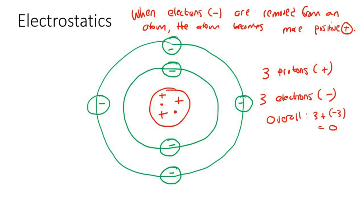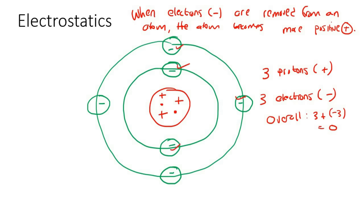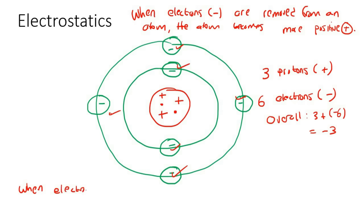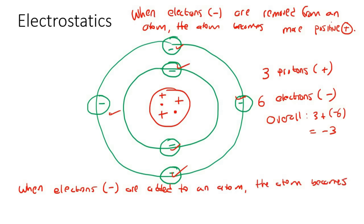We can work it out: there are three positives in this atom, but six negative electrons. So three minus six gives you negative three as your overall charge. The atom has now become more negatively charged. So when electrons, which are negative, are added to an atom, the atom becomes more negative.